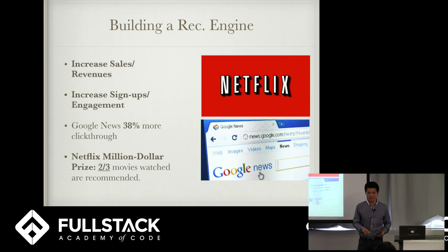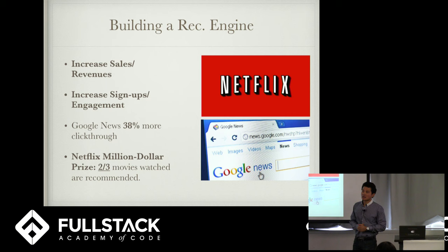Google News saw 38% more click-through because of recommendations. Netflix in 2009 had a million-dollar prize where they awarded a team that came up with the best algorithm to predict movie ratings.